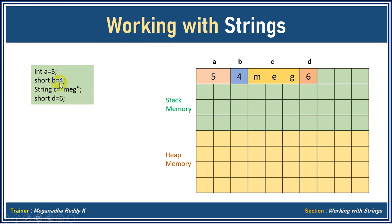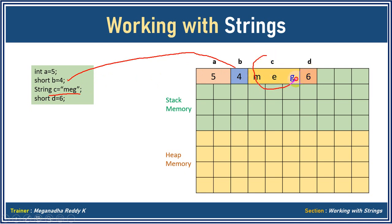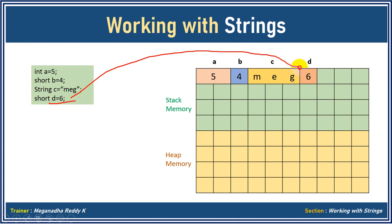Now let's assume I want to declare c = "meg". Each character in Java takes two bytes of memory. So here I gave six bytes, indicating three cells. Now "meg" is stored there. Let's assume string is stored like this — but it will not be stored like this, and I'll explain why. After that we have the last variable d = 6, which is a short, taking two bytes — one cell — and storing six.